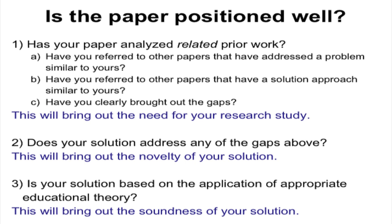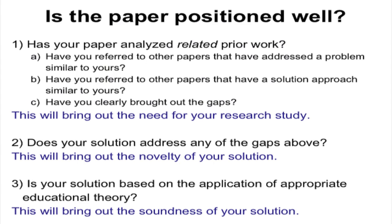The first thing is to refer to other papers that have addressed a problem similar to yours, and also papers that have a solution approach similar to yours. This is a very important thing which referees look for and which often is missed by enthusiastic researchers who get carried away with doing the work and not keeping in mind whether they are reinventing something or addressing a gap. You also want to see whether your solution is based on application of appropriate educational theory — not simply 'I felt like doing this, so I did this.' Papers of that type are called 'I did this, I saw that' papers and they invite a referee to reject them.